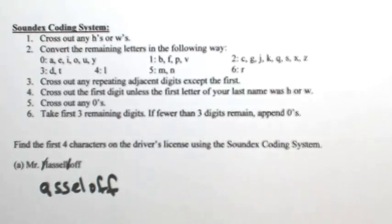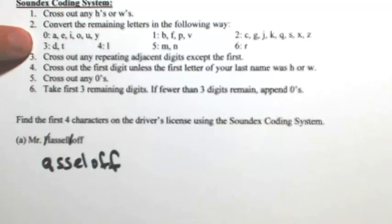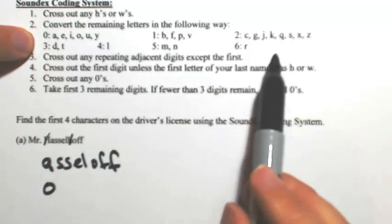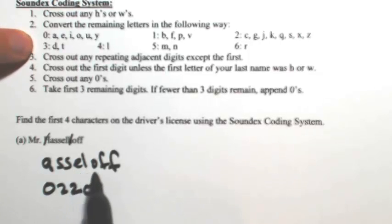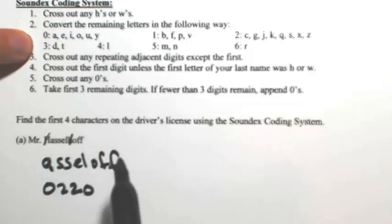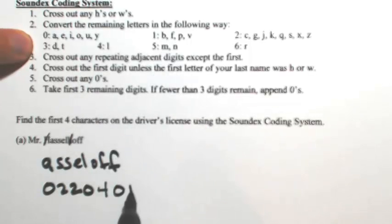So that's the only part of the name that's going to get encoded. We're going to convert any remaining letters using the following key. So all the vowels are going to be zeros. F is going to be a two followed by another two. Again, the vowels are zero, and L is a four, and F would be one.